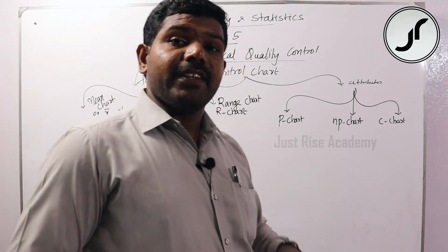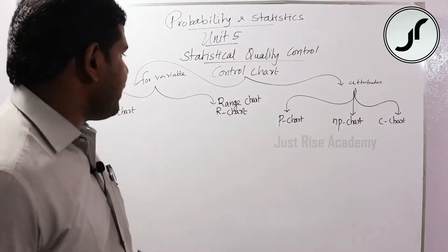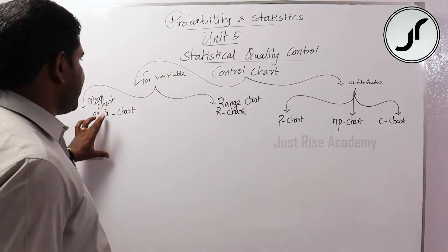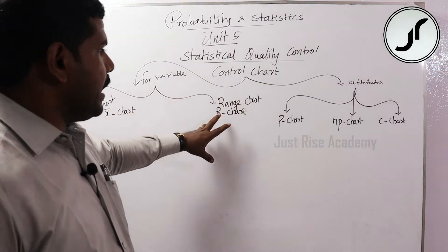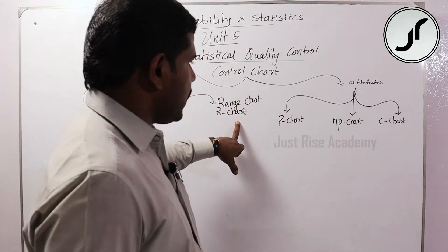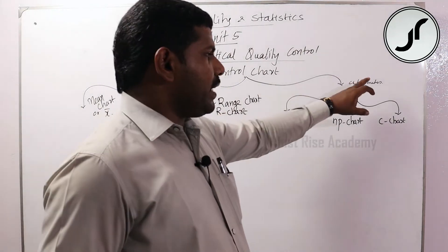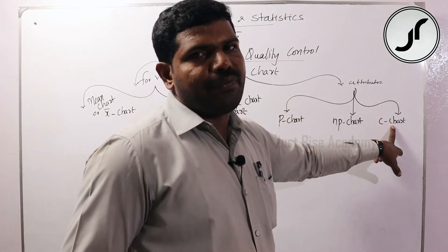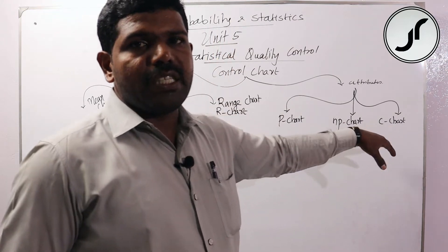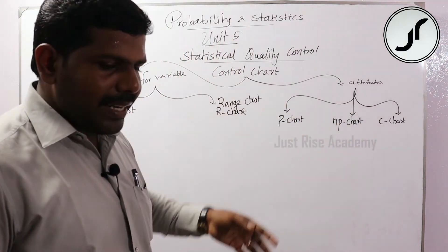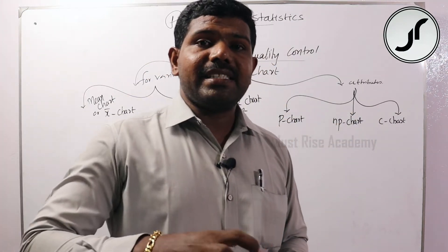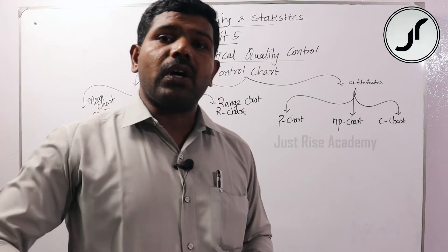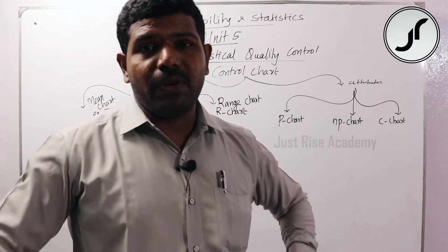We are expecting five types of problems for the university examination. For variables, we have the mean chart or X-bar chart and the range chart or R-chart. For attributes, we have three types of charts. Using these charts, we can conclude whether the statistical data is in control or out of control.